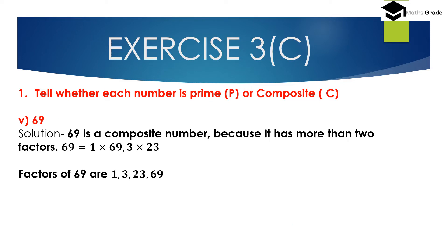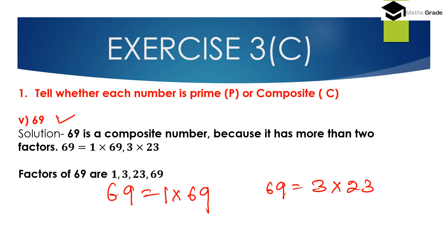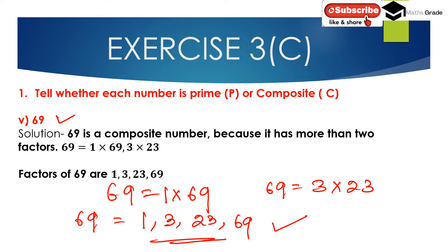Next, 69. One multiplied by 69 is 69, and 3 multiplied by 23 is also 69. So the factors of 69 are 1, 3, 23, and 69. Since 69 has more than 2 factors, it is not a prime number — it is a composite number.